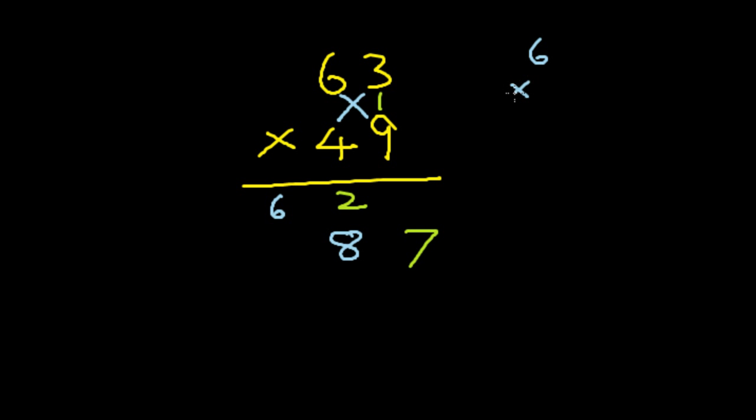I'll take another example. 63 times 49. First, we multiply the right hand digits. 3 into 9 is 27. So 7 carry 2. Next, we cross multiply and add. 6 times 9 is 54. 54 plus 4 times 3 that is 12 is 66. Plus the carry 2 is 68. I'll just repeat. 6 times 9 is 54. And 3 times 4 is 12. You add these two, you get 66.